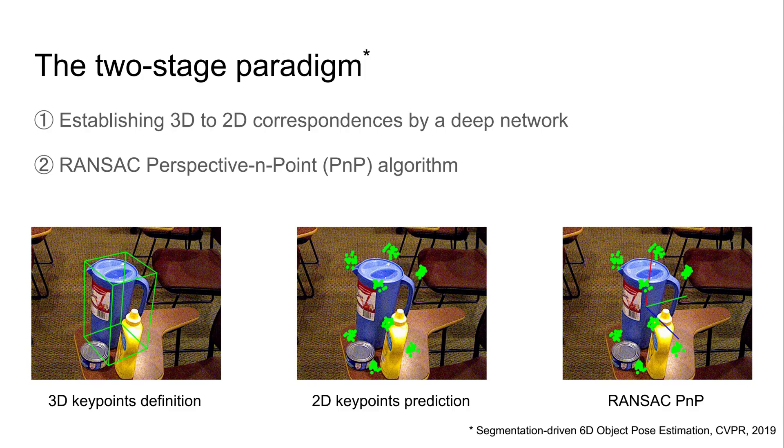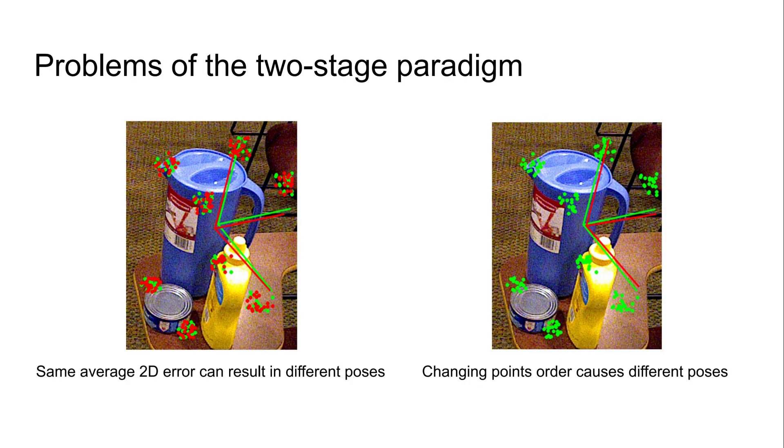Most recent 6D pose frameworks are two-stage methods, that is establishing correspondences by network followed by RANSAC PnP. This two-stage process, however, is sub-optimal.